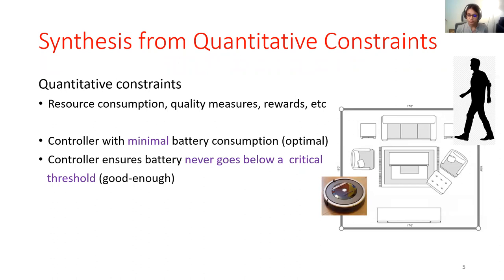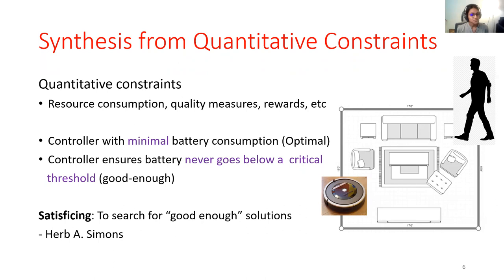And this problem, which is to search for a solution that is good enough, is the problem of satisficing. This word originated in economics by Herb Simons. And as demonstrated through this example, it could be of much relevance to reasoning about quantitative properties in formal methods as well.